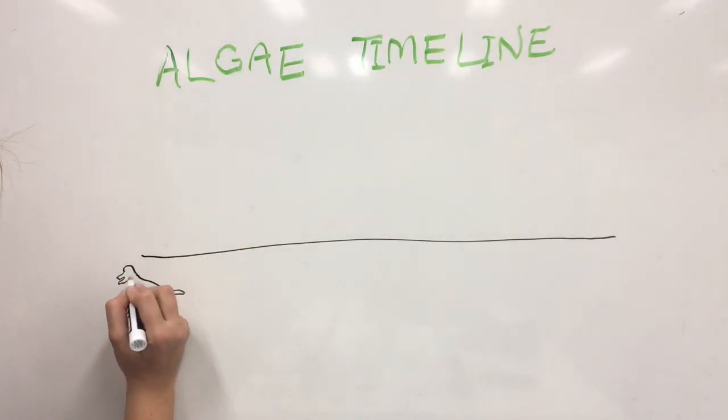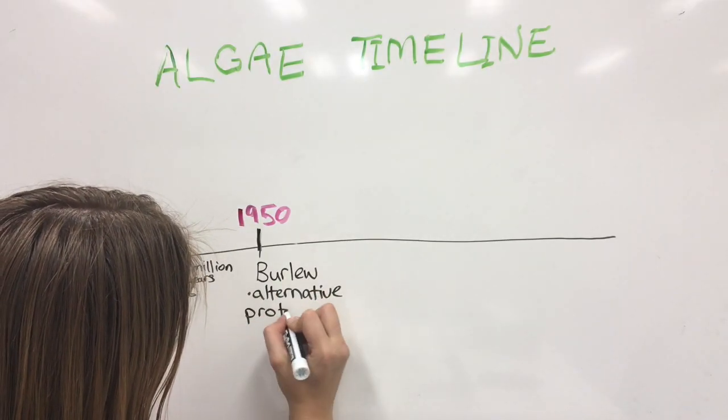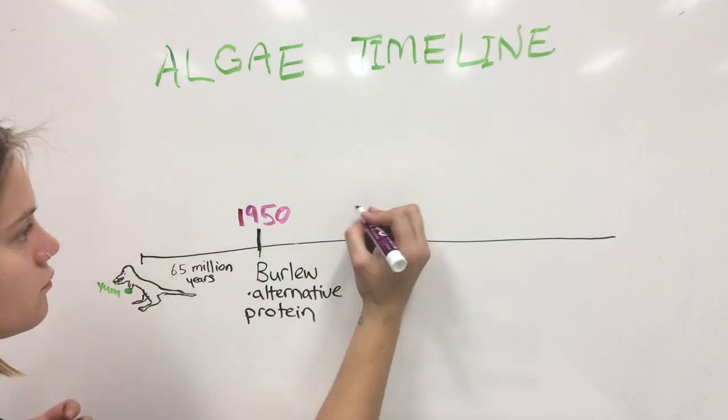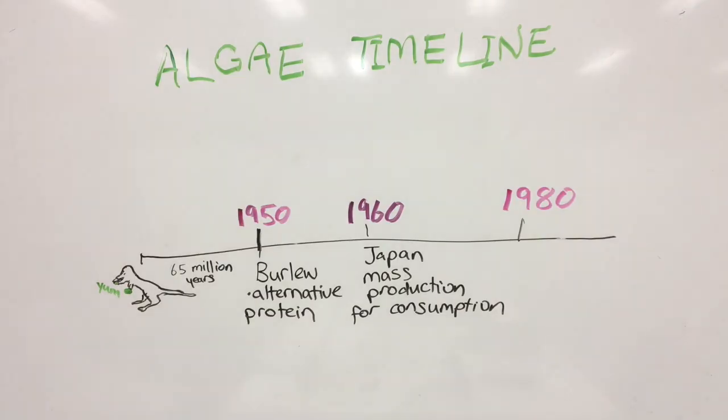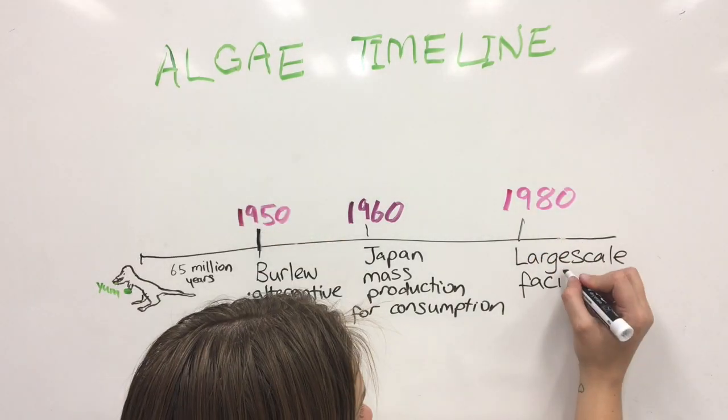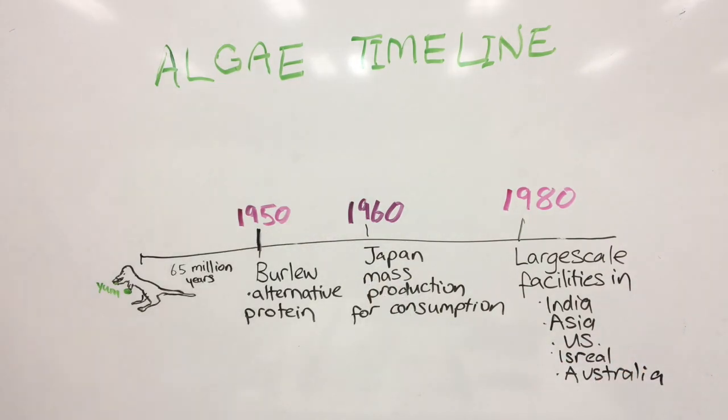As early as the 1950s, Berlou proposed the use of algae for alternative protein sources to face global food demand, and in the 1960s, Japan started the first industrial-scale production of the micro-algae species Chlorella for human consumption. By the 1980s, large-scale algal production facilities were established in Asia, India, the US, Israel, and Australia.